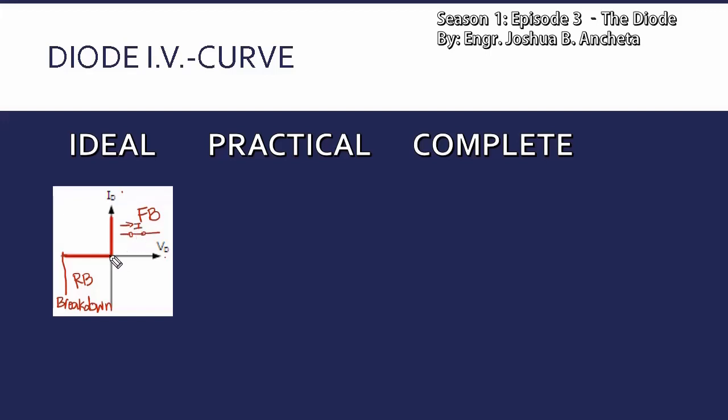Ito yung zero voltage across the diode, pero yung current maximum — can reach the maximum value.